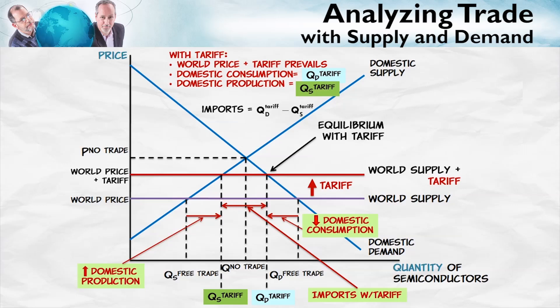A tariff is a tax on imports. This is the quantity of imports; this is the amount of the tax or the tariff. So the tariff will also generate some revenues — this is the revenue from the tariff, which goes to the government. It's the tariff amount times the quantity of imports with the tariff, so this is revenue that flows to the government.